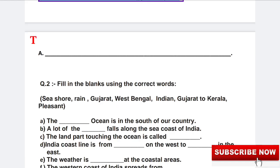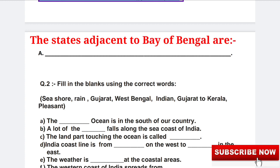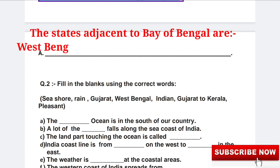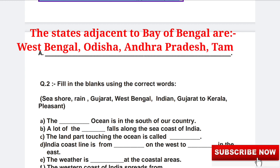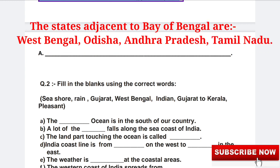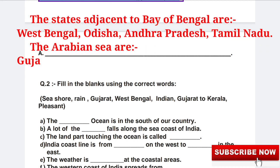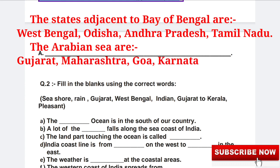The states adjacent to the Bay of Bengal are: 1. West Bengal, 2. Odisha, 3. Andhra Pradesh, 4. Tamil Nadu.